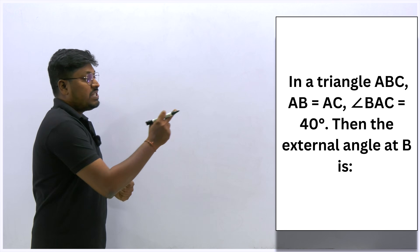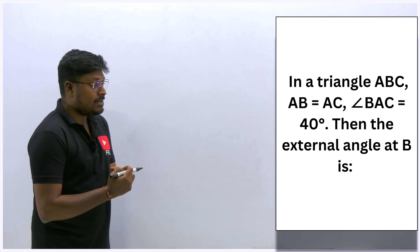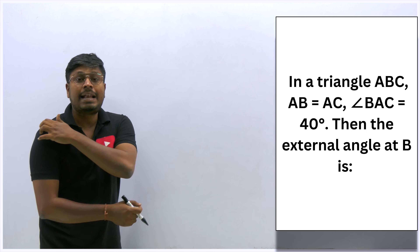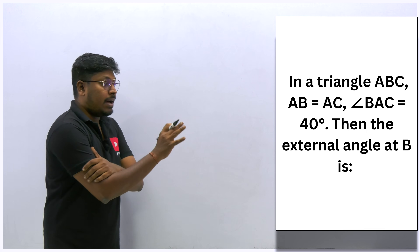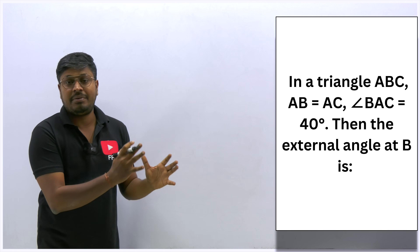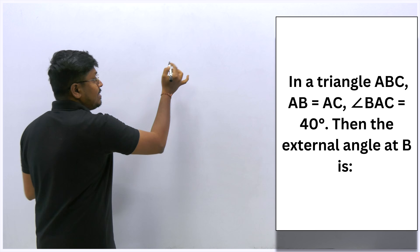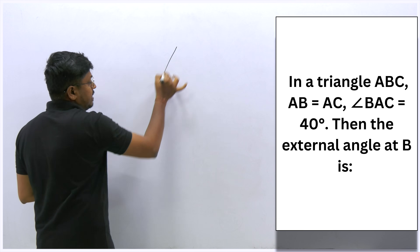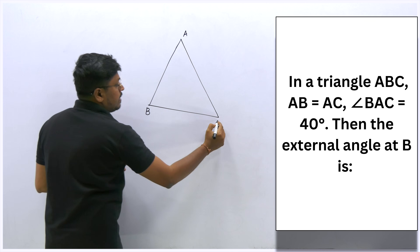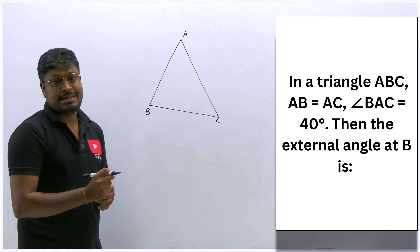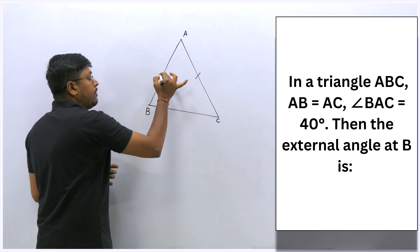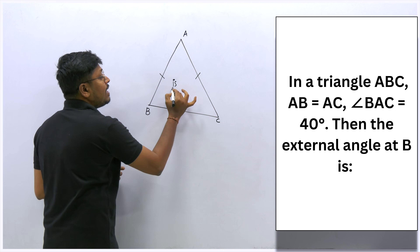Question 1: In triangle ABC, AB equals AC and angle BAC equals 40 degrees. Find the external angle of B. Draw a diagram with vertices A, B, and C. Since AB equals AC, this is an isosceles triangle.